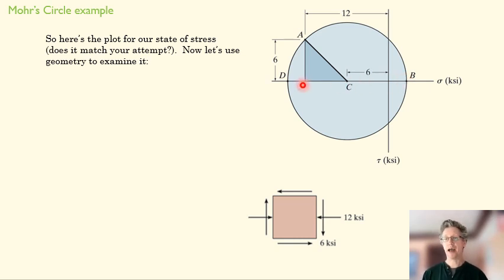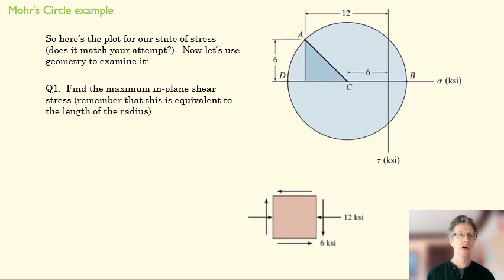We already know what our maximum and minimum normal stresses are, and we have a good sense of what our maximum in-plane shear stress is. It's going to be more than 6, maybe 7, 8, 9, something like that. Find the maximum in-plane shear stress. This is equivalent to the length of our radius. So pause, solve that, put it in Moodle, and then come back.